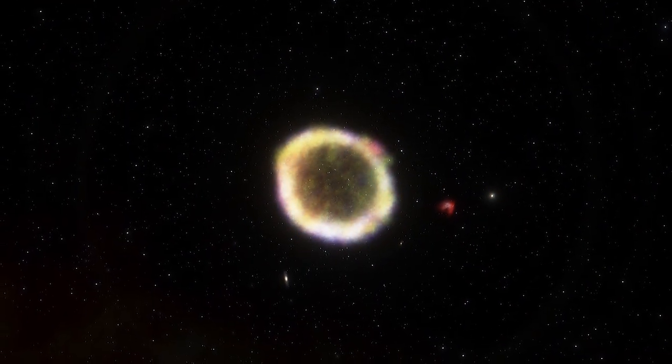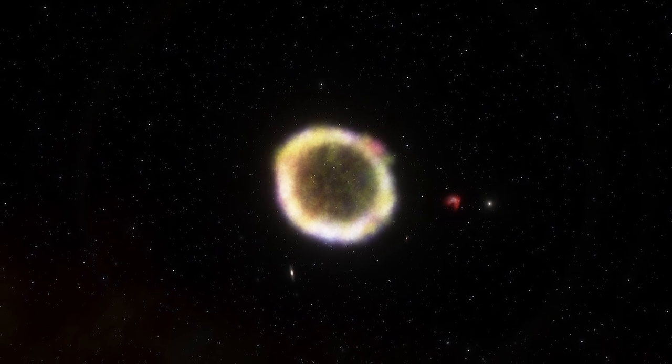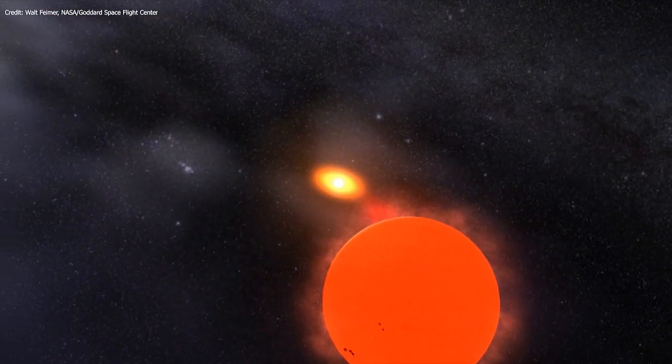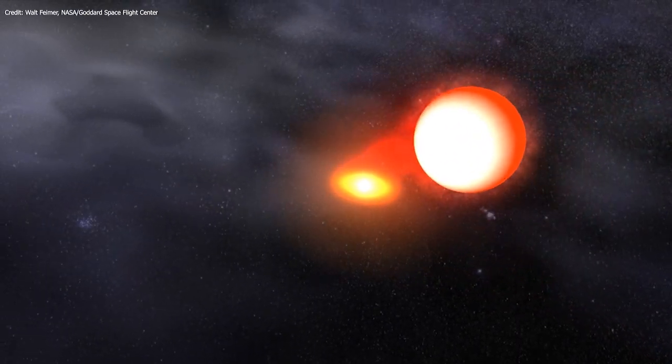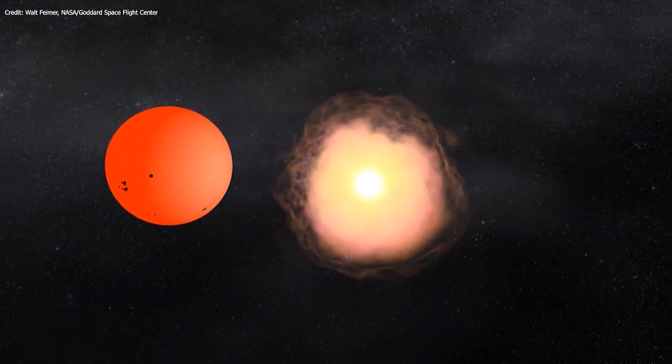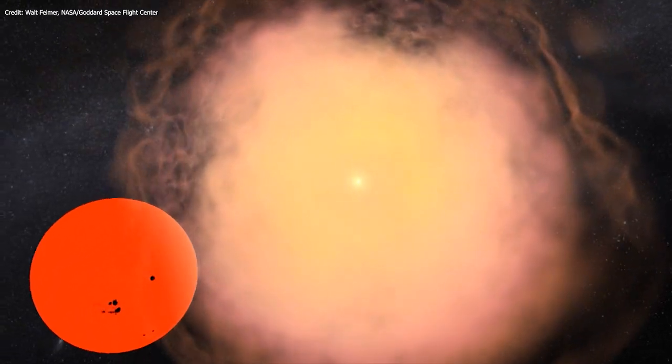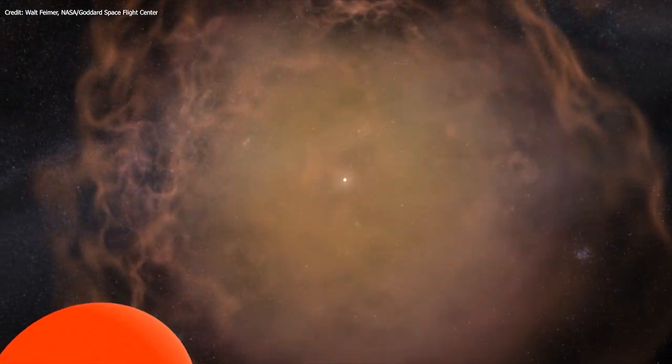This particular supernova is a Type Ia. These supernovae occur when a white dwarf star sucks so much matter from its companion star until a violent explosion destroys the white dwarf and blows its debris outward into space.